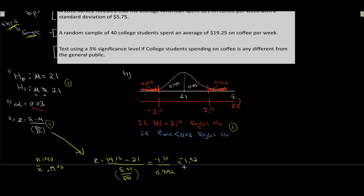Our calculated z is −1.92. Our critical value cutoff is ±2.17. Since −1.92 is not in the rejection zone — it's not beyond −2.17 — we fail to reject the null. That is, there is not sufficient evidence that college students spend differently from the general public.